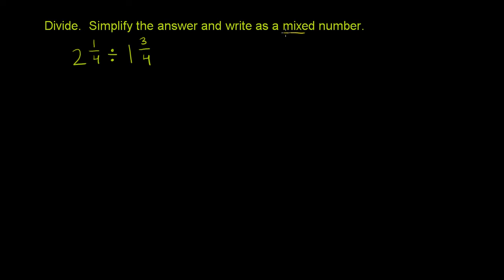Divide. Simplify the answer and write as a mixed number. And we have 2 and 1/4 divided by 1 and 3/4. So the first thing we want to do, since both of these are mixed numbers, is to convert them both into improper fractions. So let's start with 2 and 1/4.